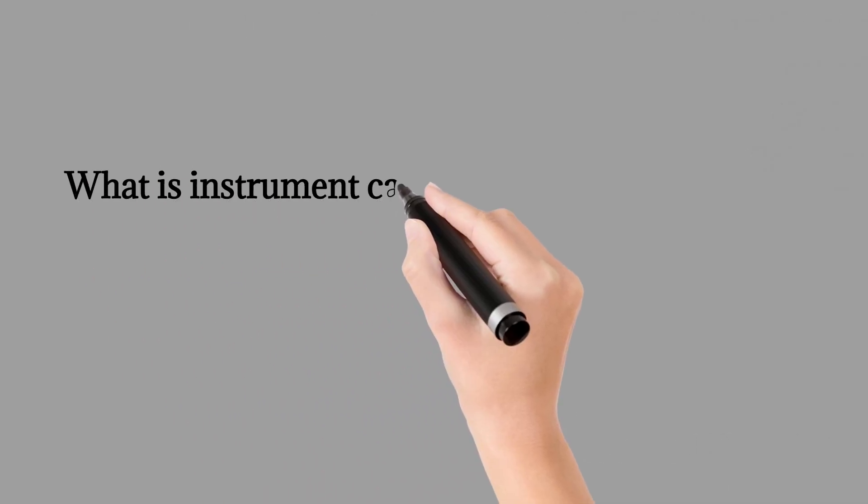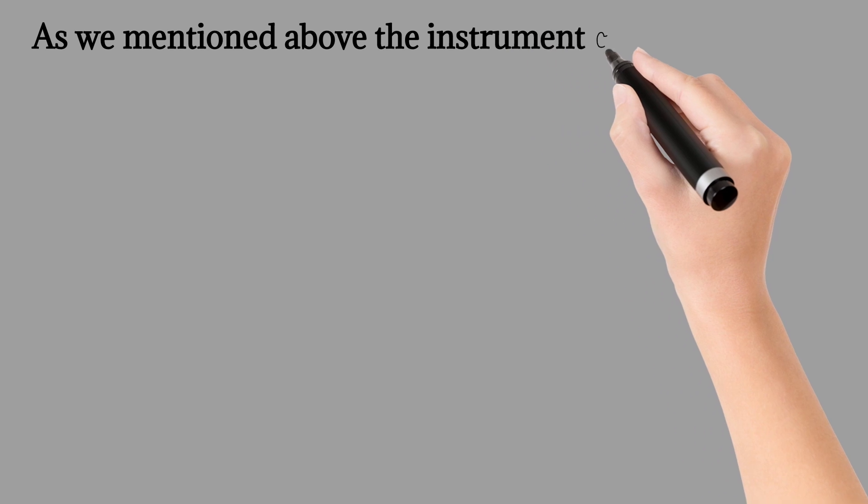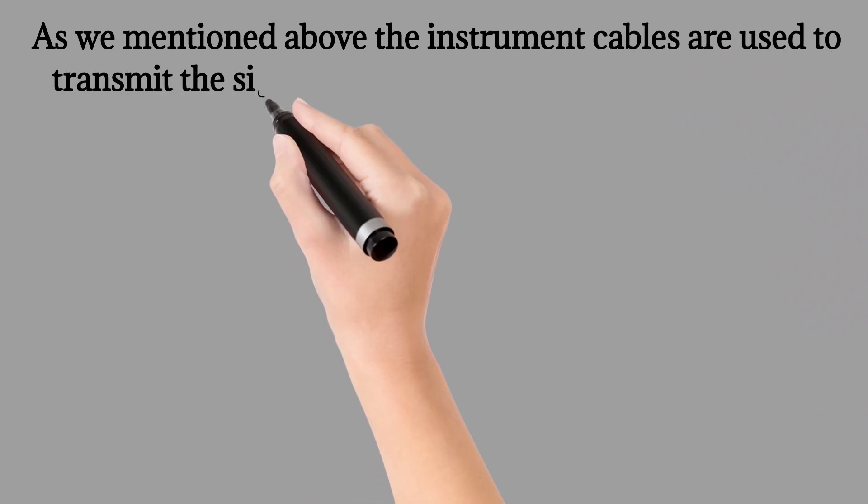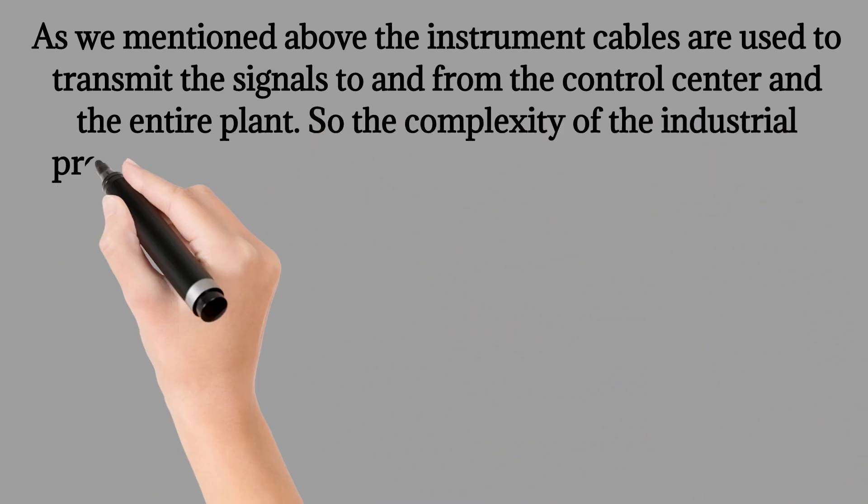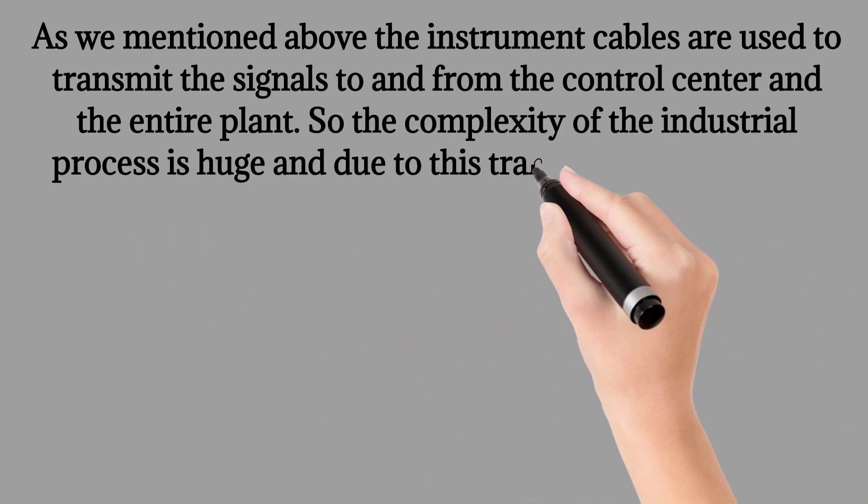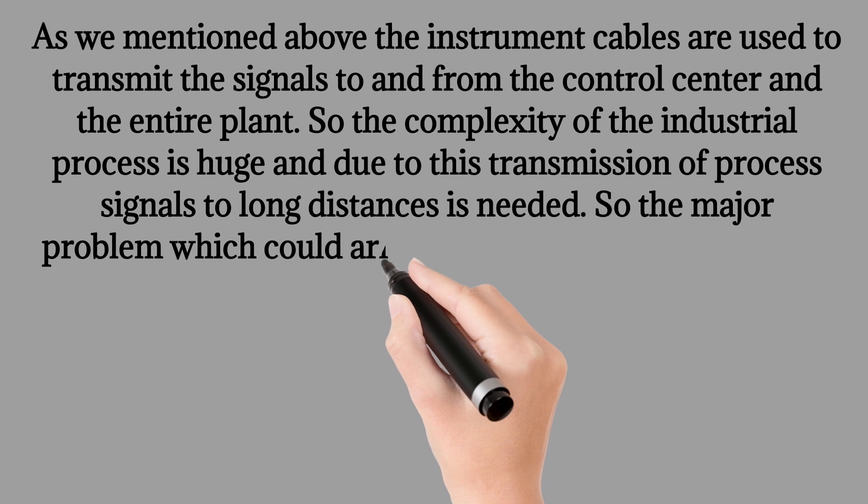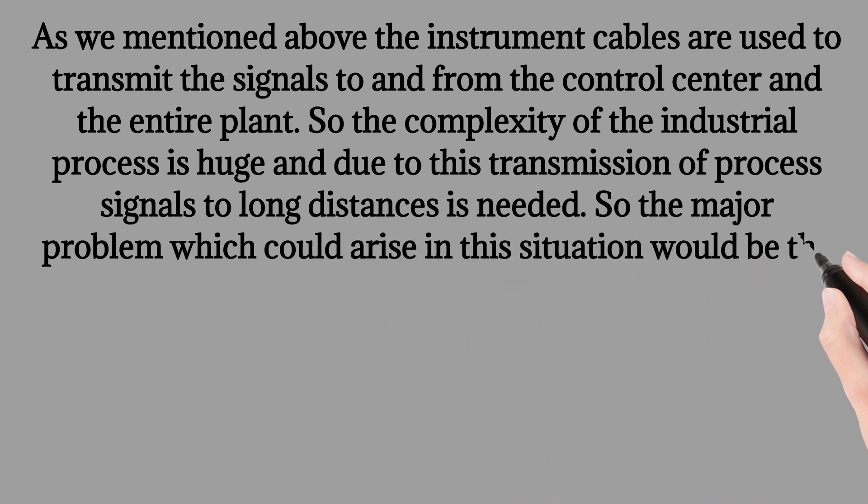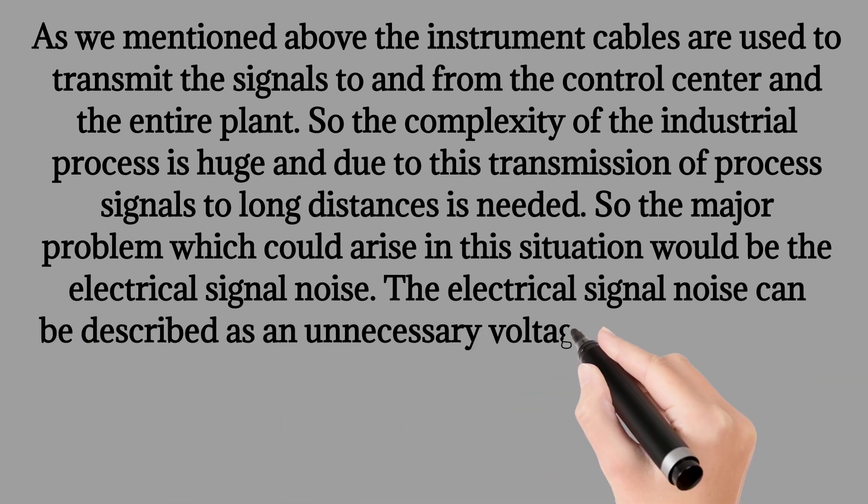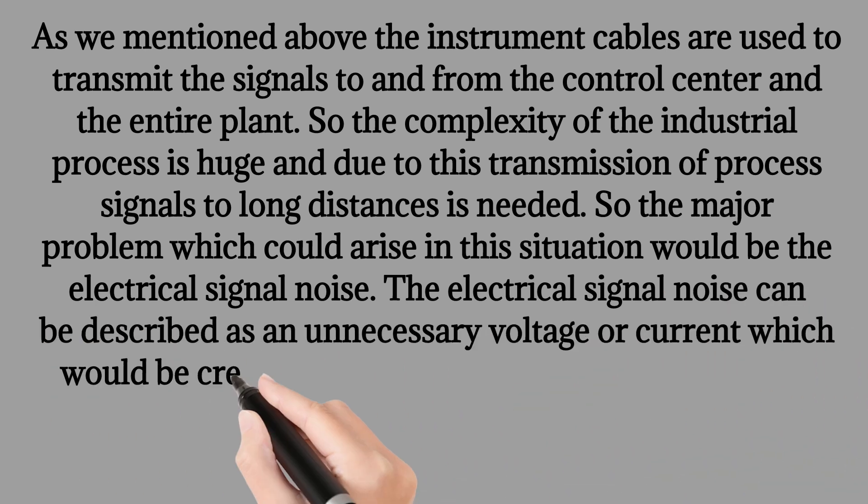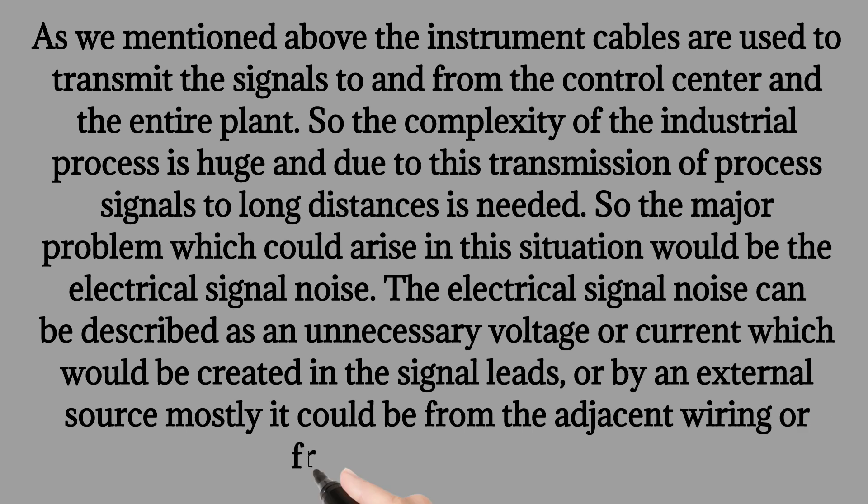What is instrument cable shielding and why is it required? As we mentioned above, the instrument cables are used to transmit the signals to and from the control center and the entire plant. So the complexity of the industrial process is huge and due to this transmission of process signals to long distances is needed. So the major problem which could arise in this situation would be the electrical signal noise. The electrical signal noise can be described as an unnecessary voltage or current which would be created in the signal leads, or by an external source, mostly from the adjacent wiring or from the equipment.